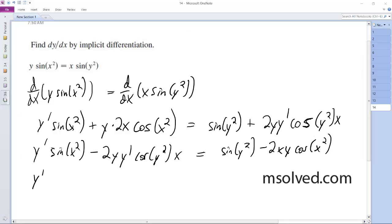Okay, so I'm going to factor this out. Cosine of y squared is equal to sine of y squared minus 2xy cosine of x squared. Okay, and dividing this through,